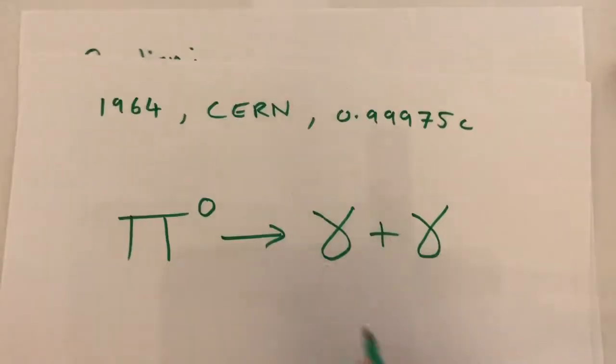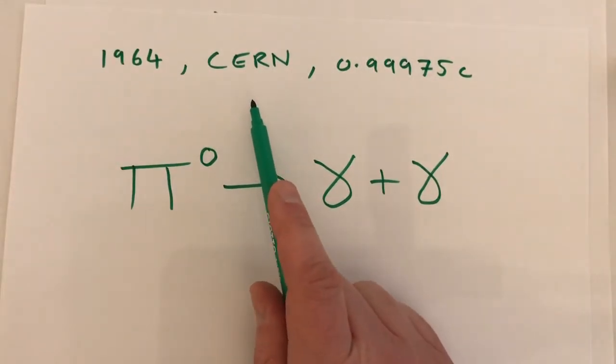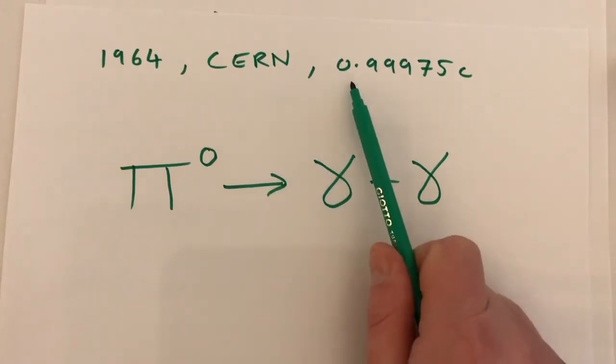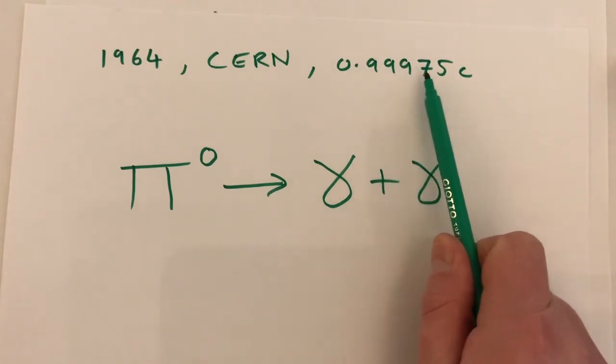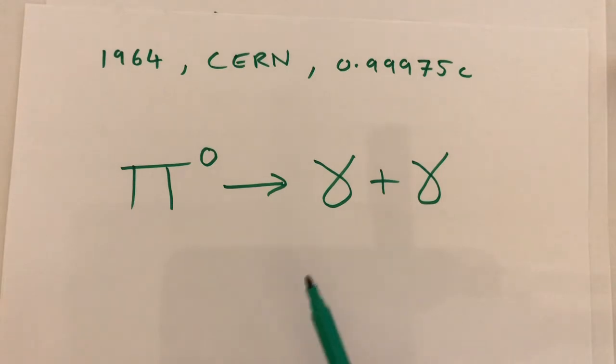In a 1964 experiment performed by physicists at CERN, generating beams of pions moving at speeds of 0.99975 the speed of light with respect to the laboratory, the pions moving at this speed then decayed and produced two back-to-back gamma rays, and the speeds of these back-to-back gamma rays were measured.